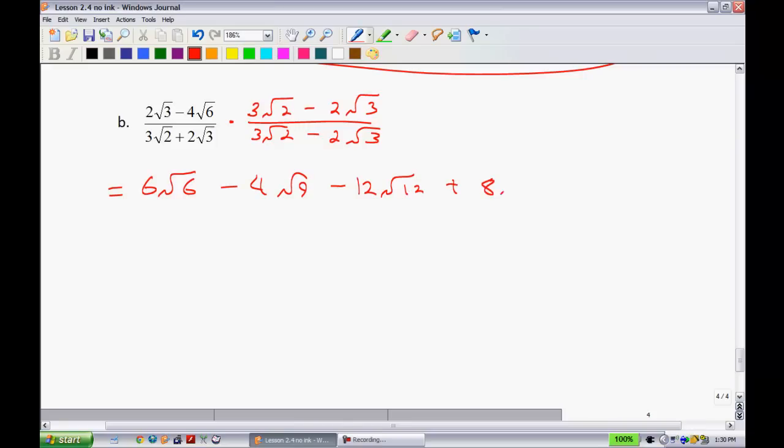12 root 12 plus 8 root 18. Now again in the denominator what I'm going to do is I'm going to square the first term. So 3 squared is 9, root 2 squared is 2, that gives me an 18.